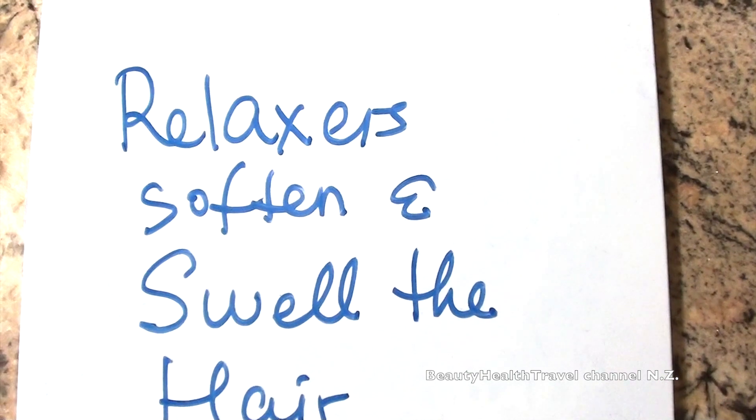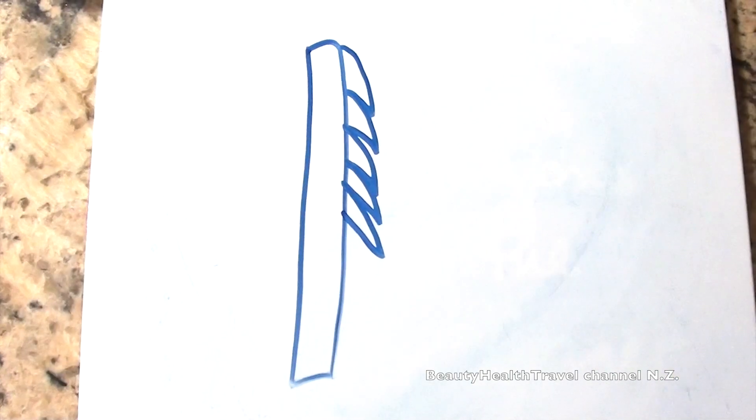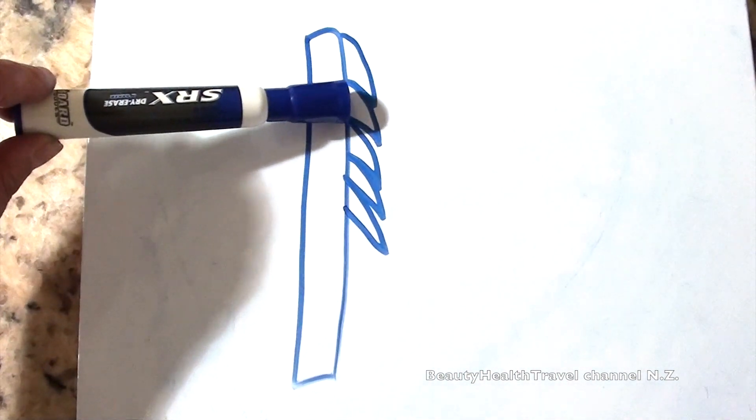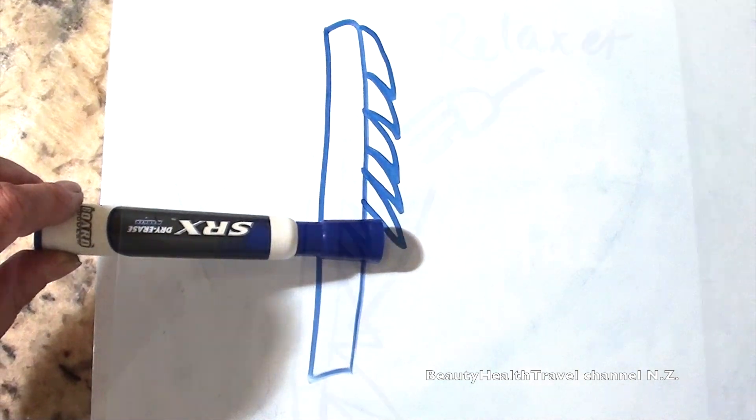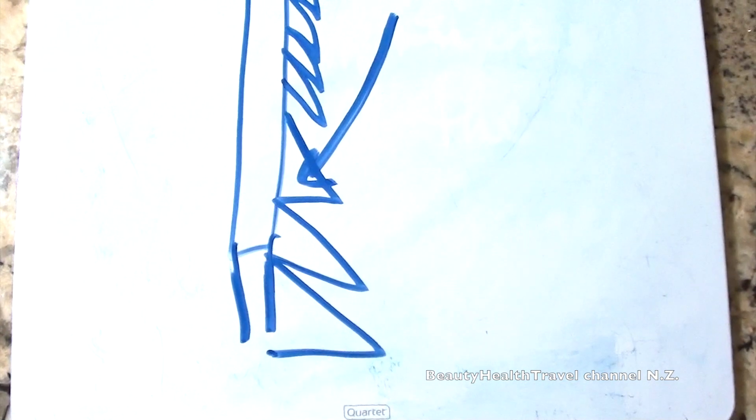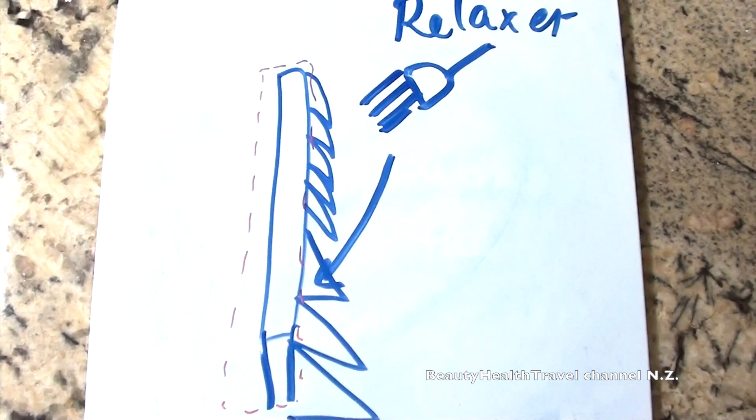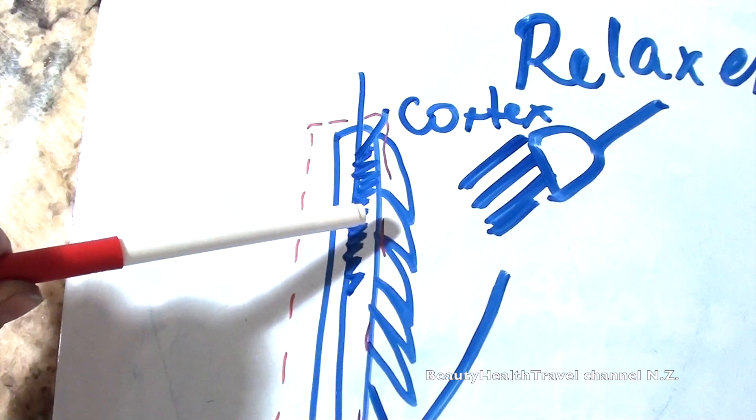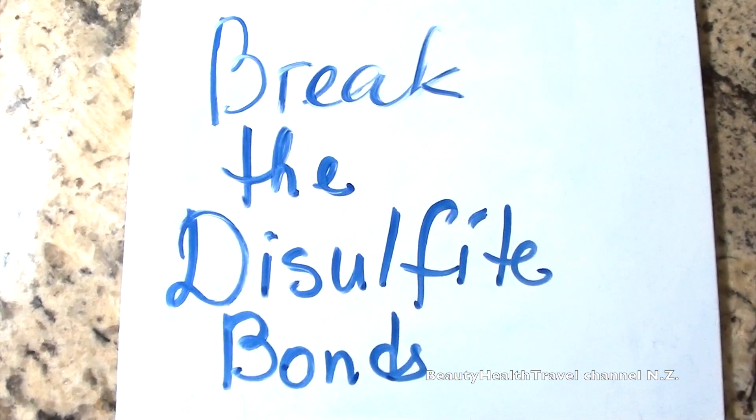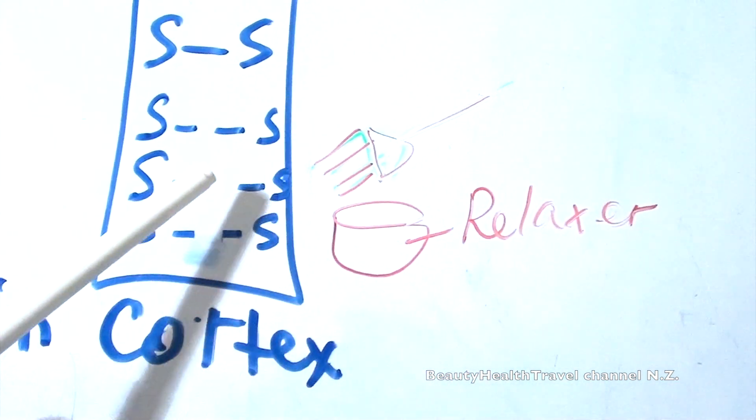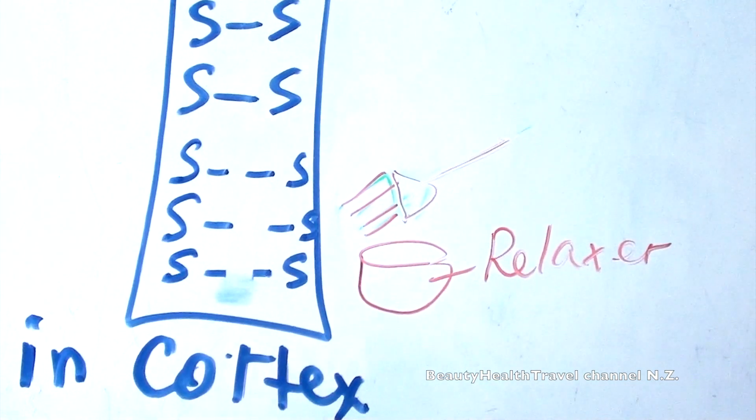Both sodium hydroxide and ammonium thioglycolate relaxers soften and swell the hair. Here's an example of a hair shaft that has the cuticle layers closed, being normal. This is poor porosity. This is good porosity, a little open. When we apply the relaxer, then it softens and swells the hair, opening up the cuticle layer and expanding the hair shaft, making sure that the product penetrates to the cortex or the cortical layer of the hair, and break the disulfide bonds which are in the cortex. Disulfide bonds are two sulfur bonds in the cortex. When we apply the relaxer to the hair, it breaks the disulfide bonds and softens and swells the hair.